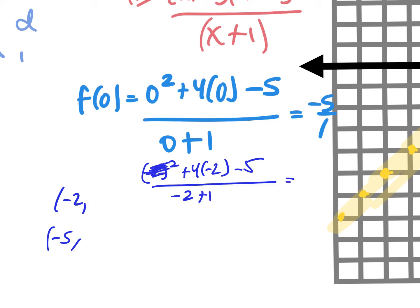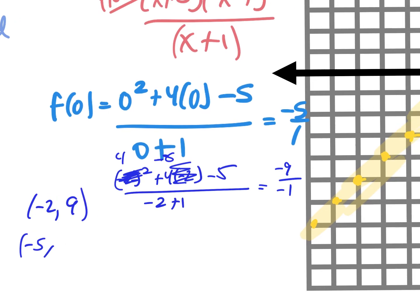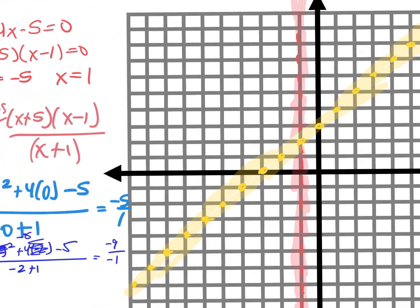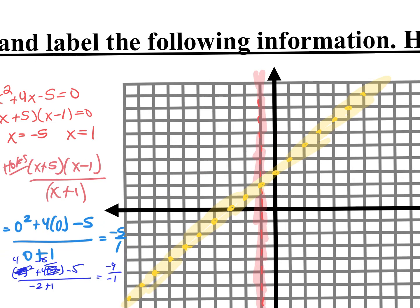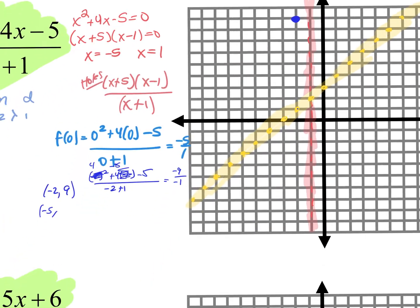What's negative 2 squared? 4. Then 4 minus 8 is negative 4, minus 5 is negative 9. And negative 2 plus 1 is negative 1. So when I plug in negative 2, I get positive 9. Let's plot that at negative 2, up 9.